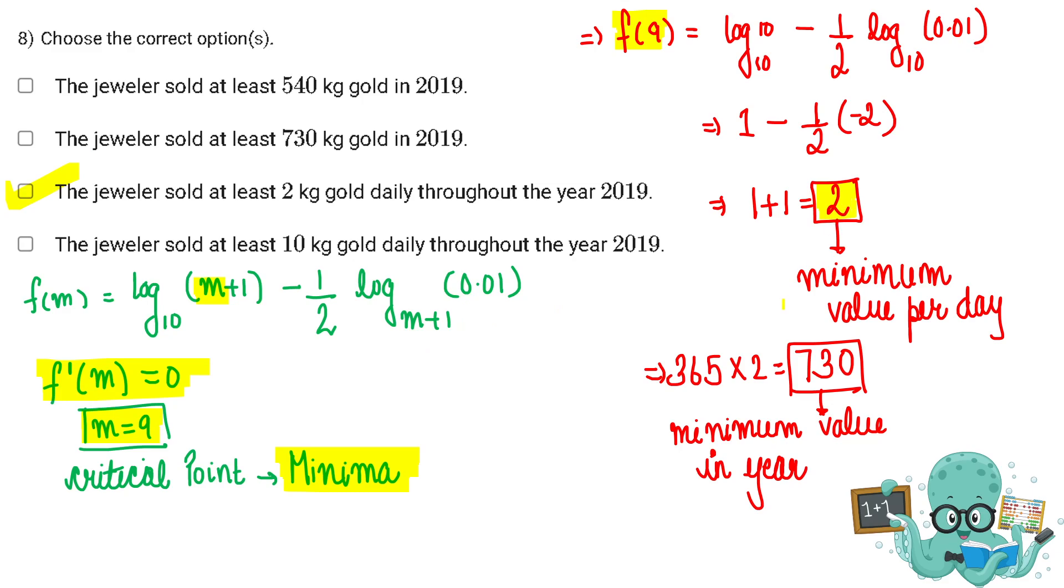And जब आप 2 को 365 से multiply करोगे, we will get the minimum gold sold by the jeweler in a year and that comes out to be 730. So basically option B and C are the correct answers.